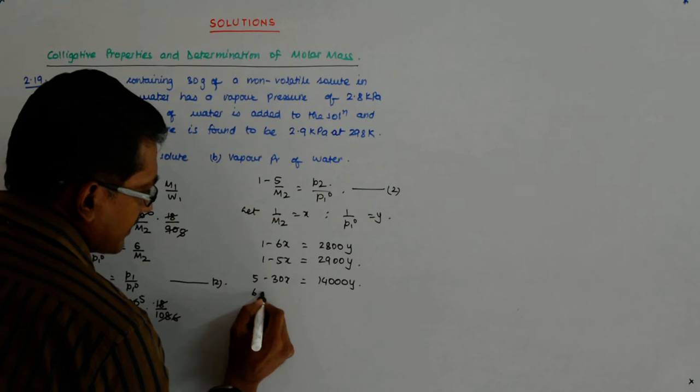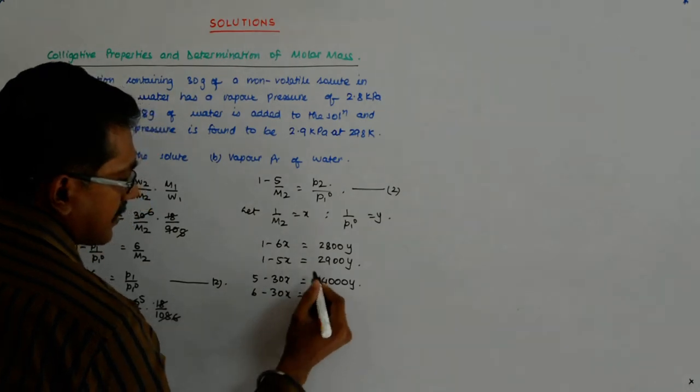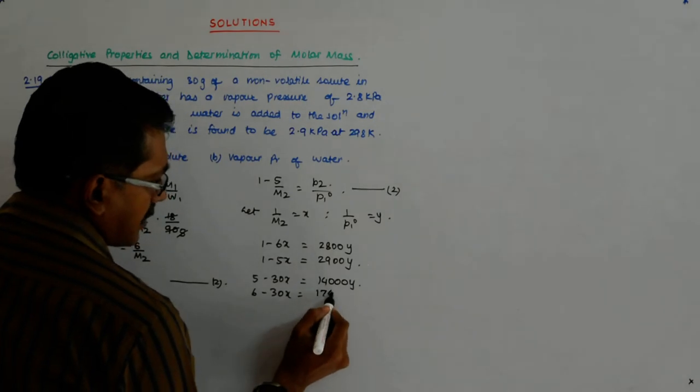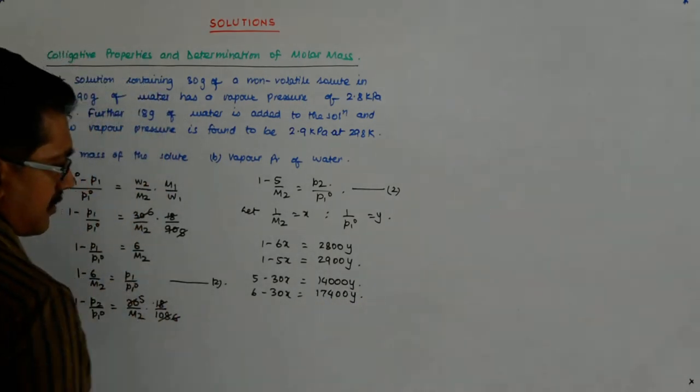And multiplying this by 6, I get 6 minus 30x is equal to 17400y, right?